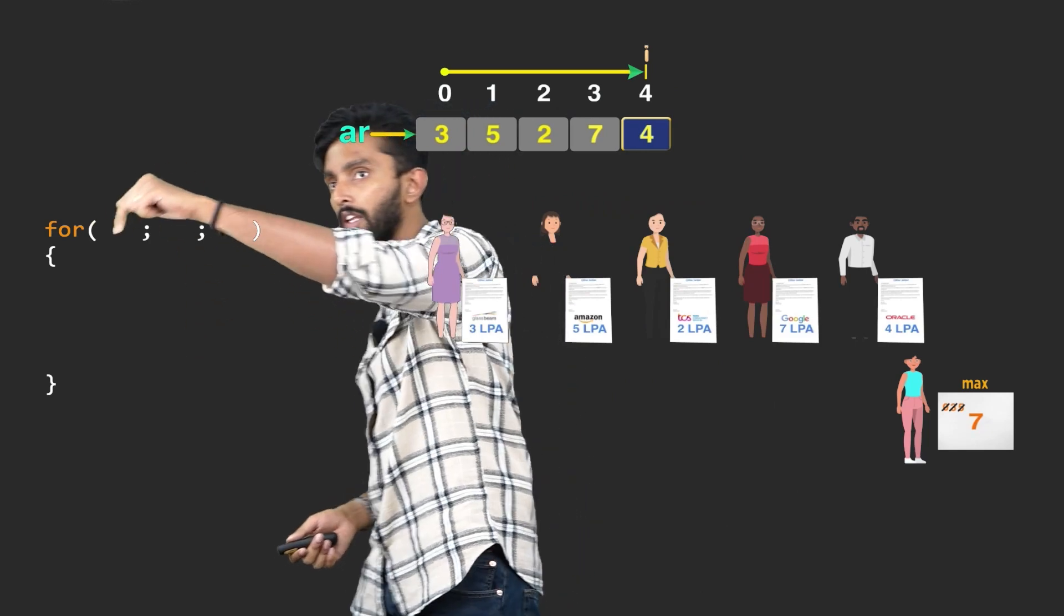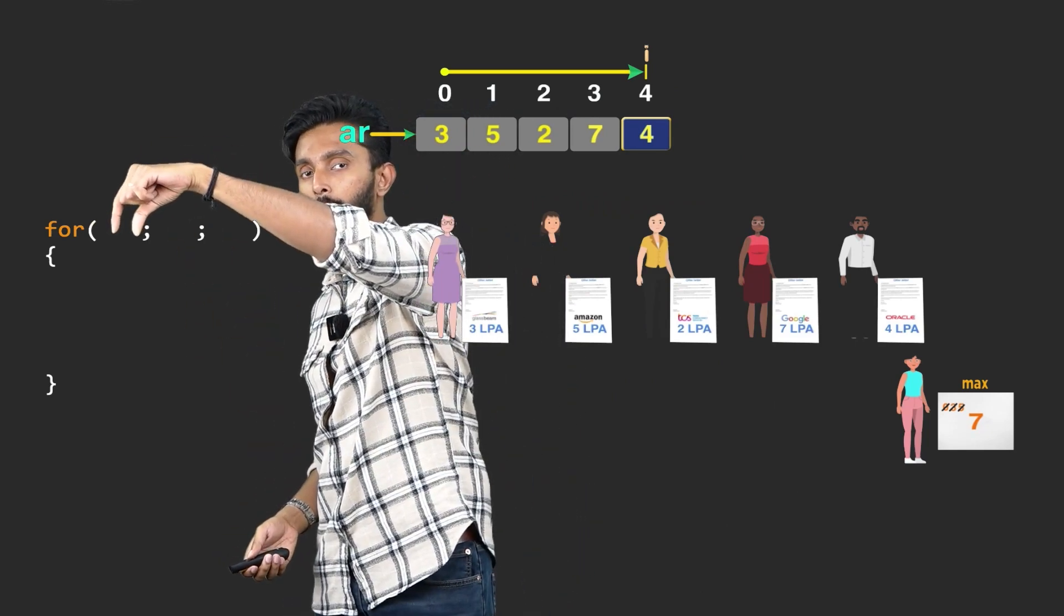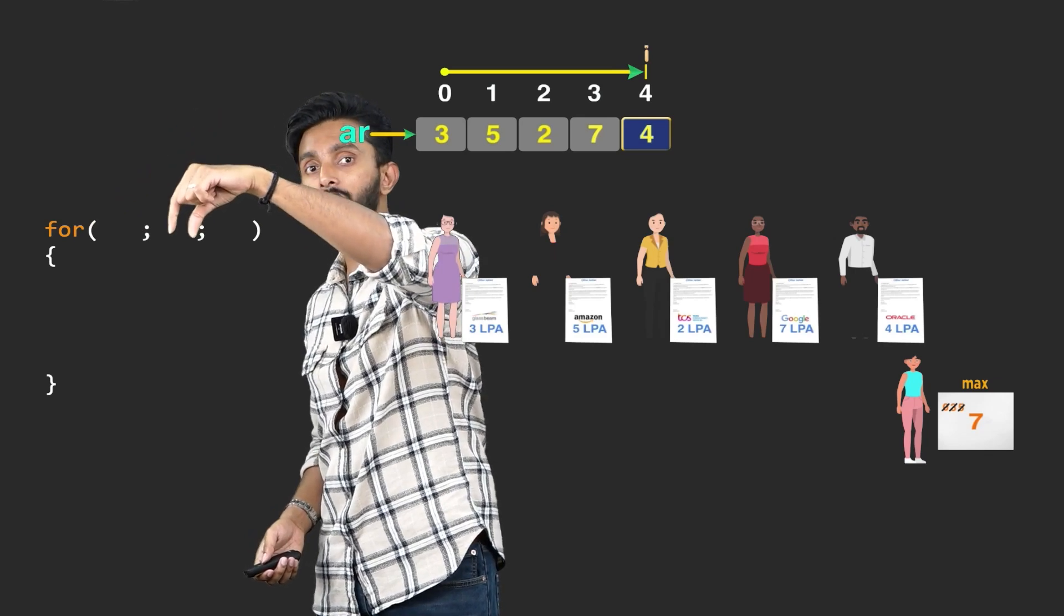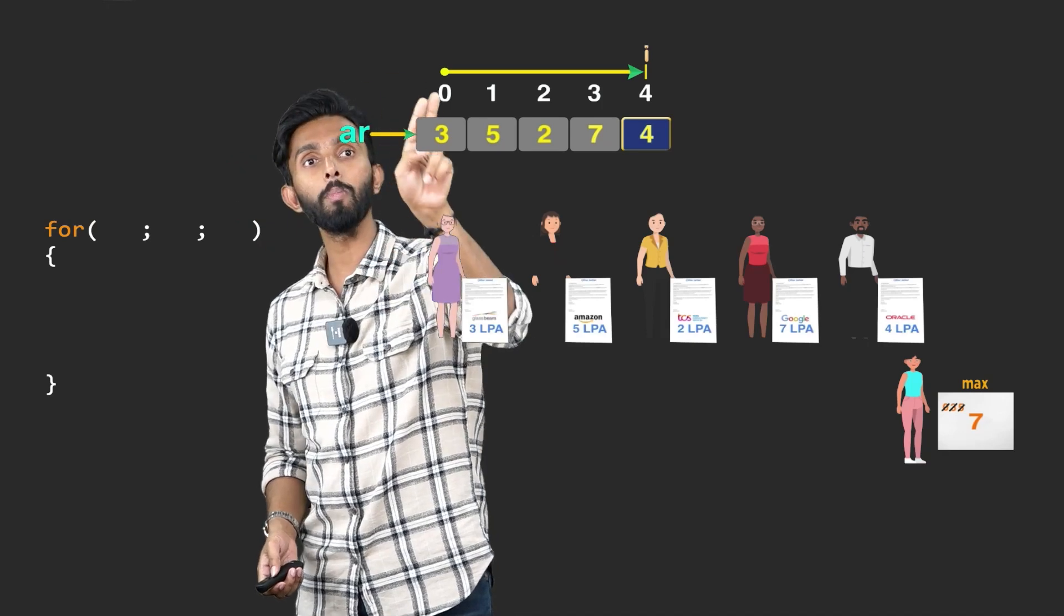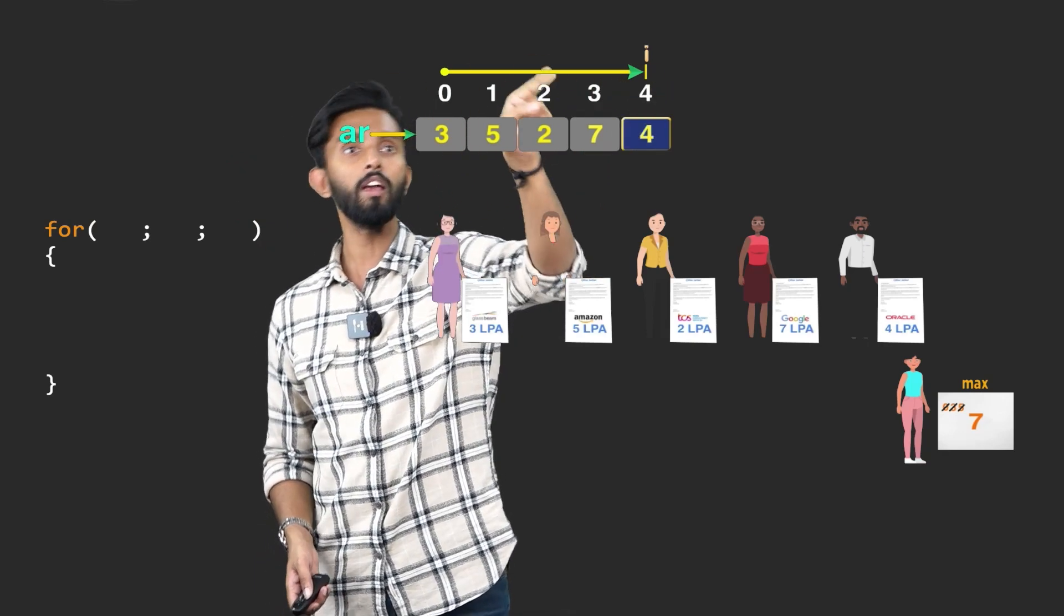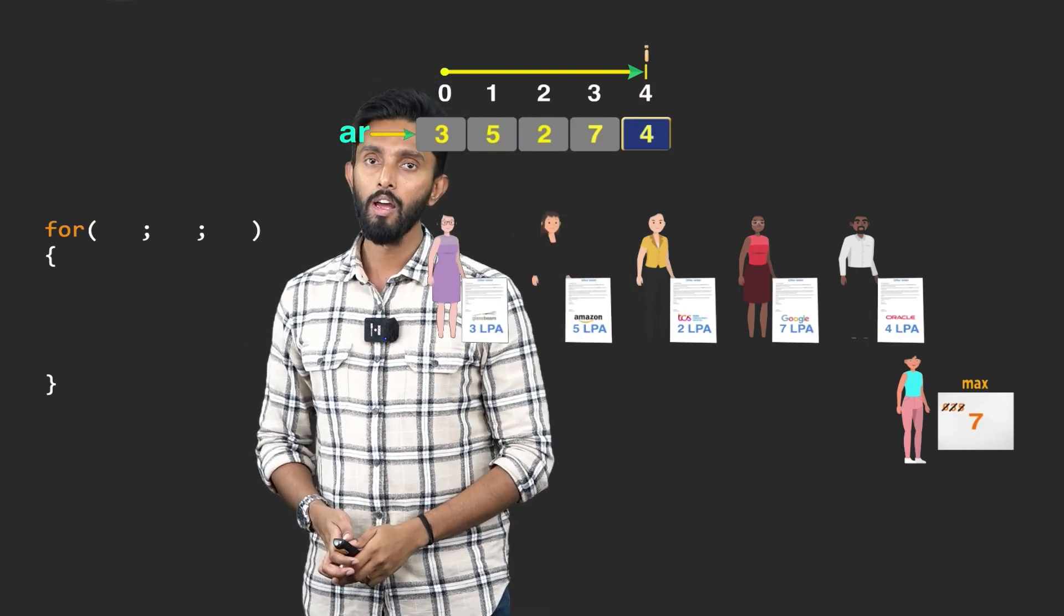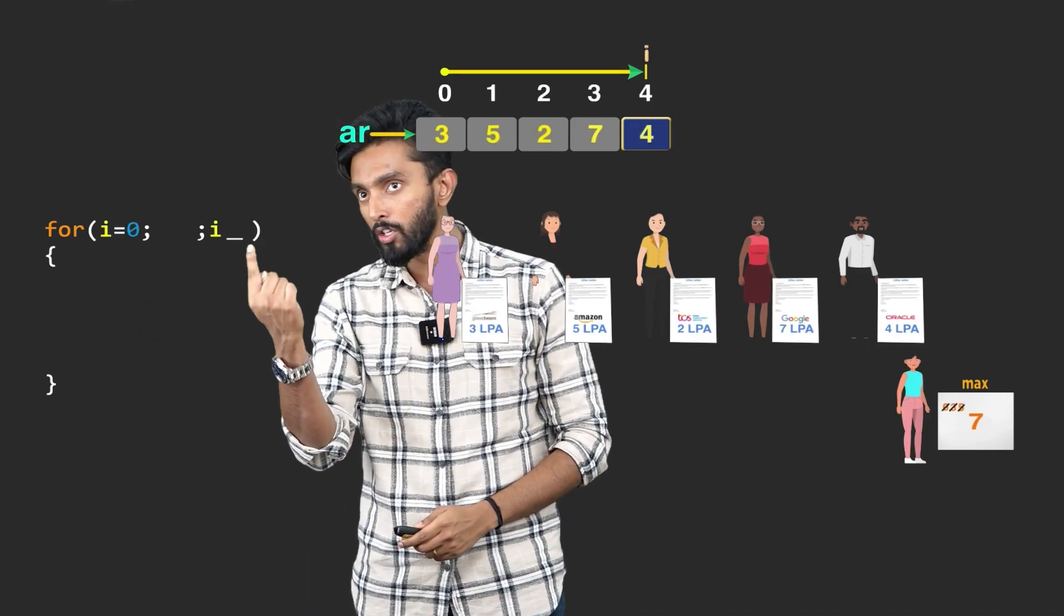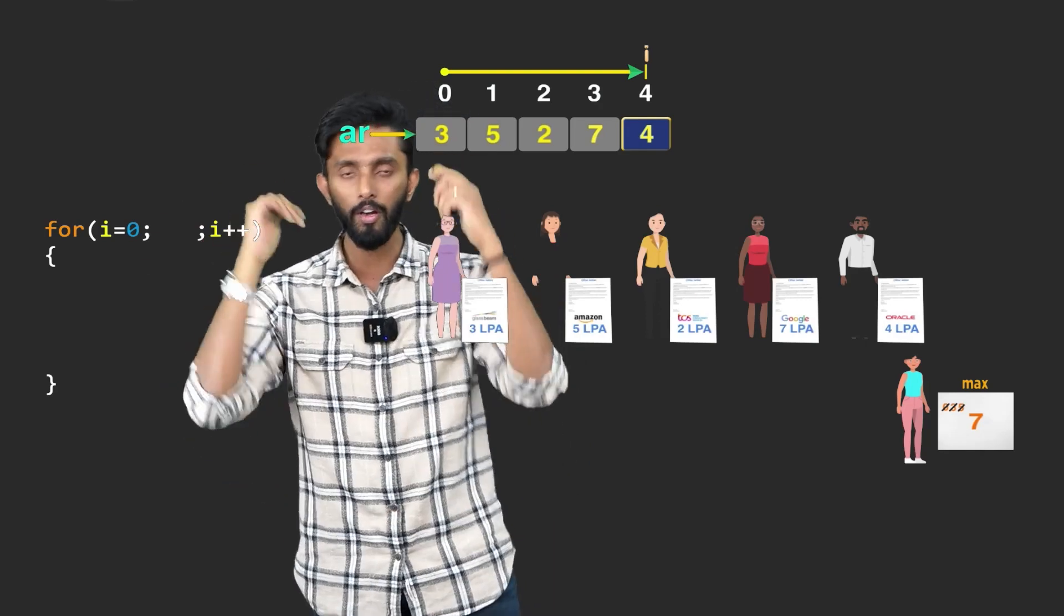Now, how to write this? First of all, if you want to do looping, we have already discussed looping. We can make use of a loop called as for loop. Now, in the for loop, you will have 3 semicolons. This is initialization. Where should I start from? This is condition. Maximum till where should I go? This is incrementation or decrementation. By how much should I increase every time? Should it increase by 1 value? Should it increase by 2 values? Should it increase by 4 values?